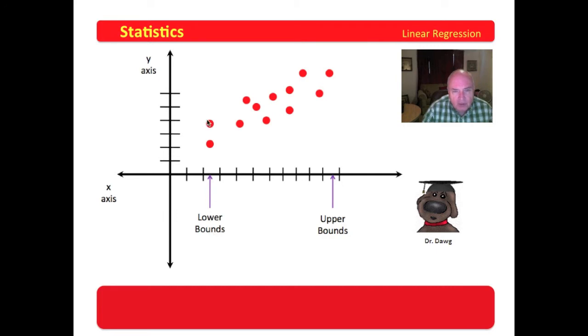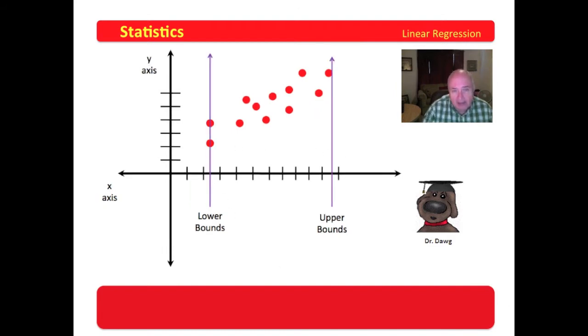But here's what we refer to as the lower bounds. The lower bounds are the data points with the smallest x value. The upper bounds is the data point with the highest x value. Now, notice all of the points for x values lie between the lower bounds and the upper bounds. When we extend those lines out, that makes it a little clearer.